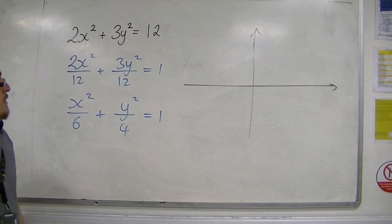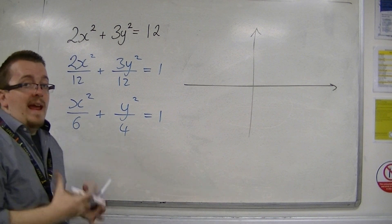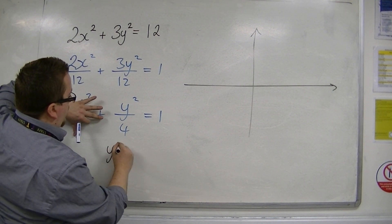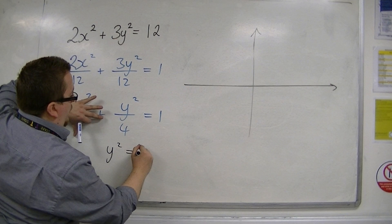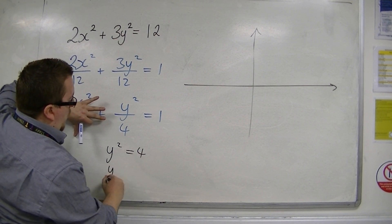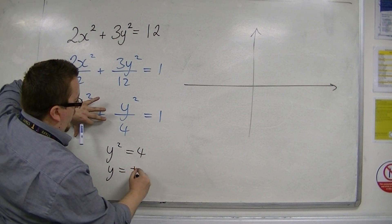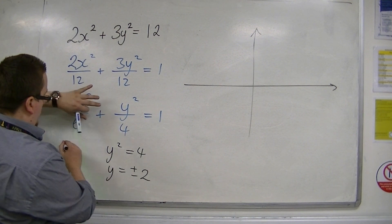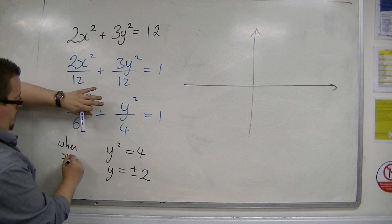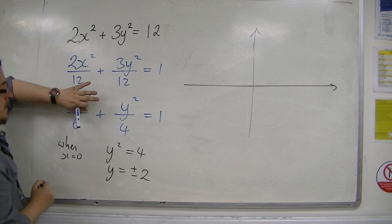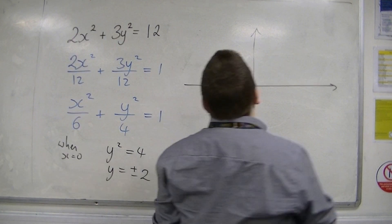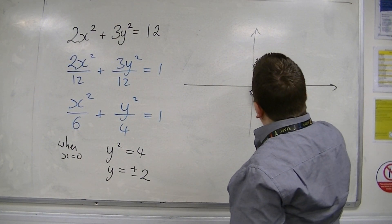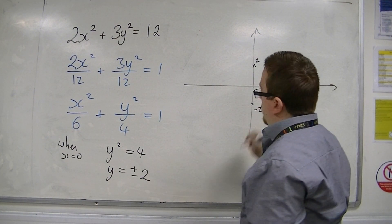Because now if I just put when x is 0, for example, then I'm going to get y squared is equal to 4. So y is equal to plus or minus 2 when x is 0. So there's 2 and there's minus 2 on the y-axis.